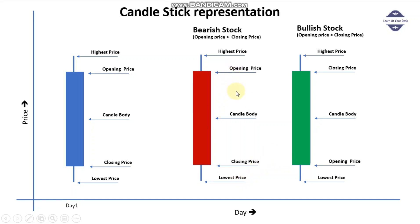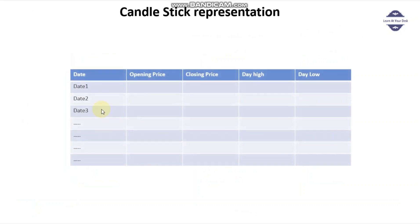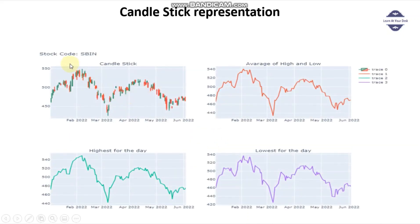Now if you want to plot a candlestick chart for one month, two months, or whatever period, every day we need the opening price, closing price, day high, and day low. Let's take some stock and based on that we'll try to plot the graph. My intention here is to first plot the candlestick, then plot the average of high and low as the midpoint, and then the highest of the day and lowest of the day — so four graphs in total, in Python, to see how market fluctuation has happened.